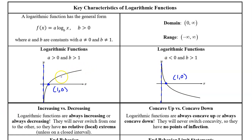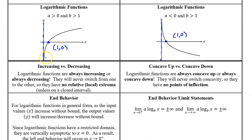Because the logarithmic curve does not reach or pass the y-axis, the domain is from zero to infinity, not including zero — it never reaches the y-axis. The range is negative infinity to positive infinity because the log function does go down and up forever. Notice that a logarithmic curve is either always increasing or always decreasing — it never switches in the middle.